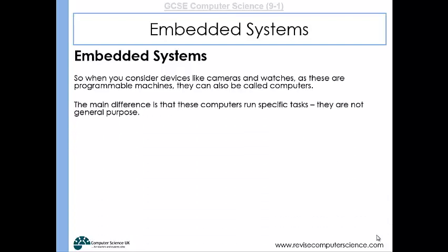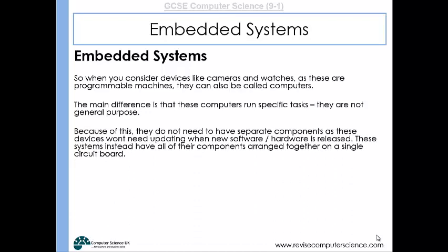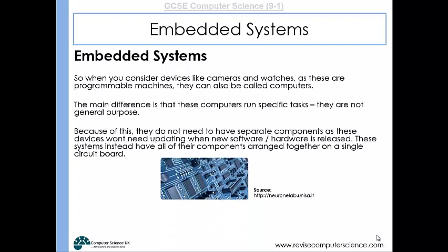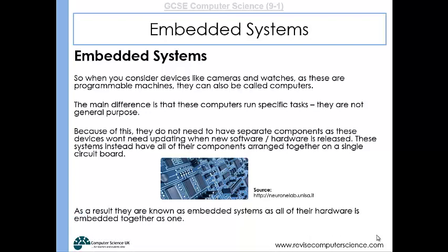Because embedded systems are not general purpose, they won't have lots of different components that need to be added, swapped and upgraded. Instead, the hardware is all arranged together on a single circuit board so that it can be highly efficient at processing data for a small number of set jobs. Embedded systems are things like DVD players, cameras and watches. All their hardware is embedded together as one.